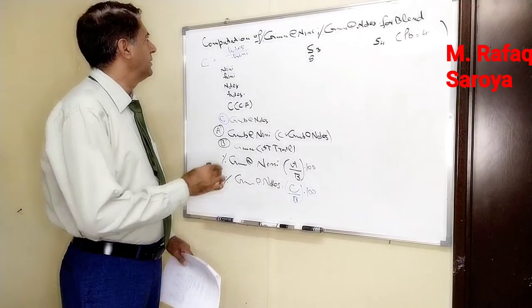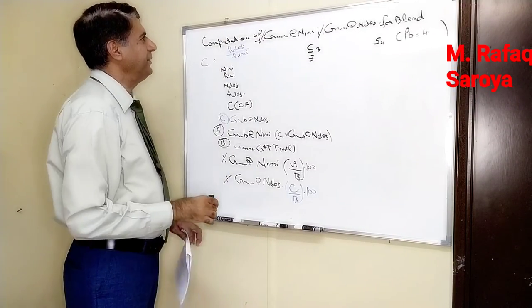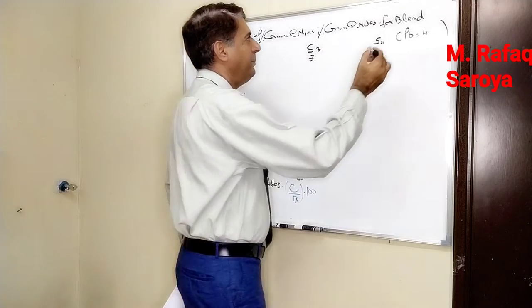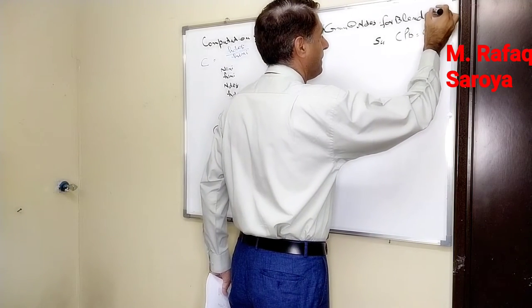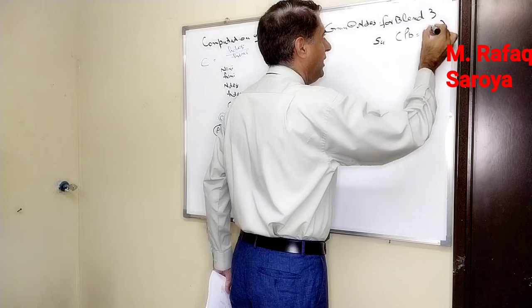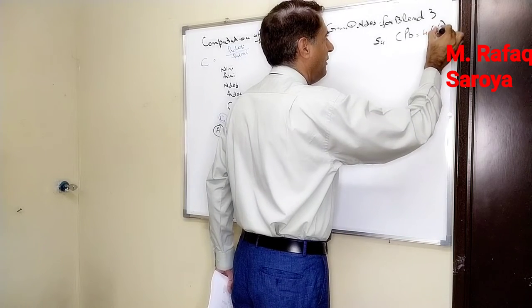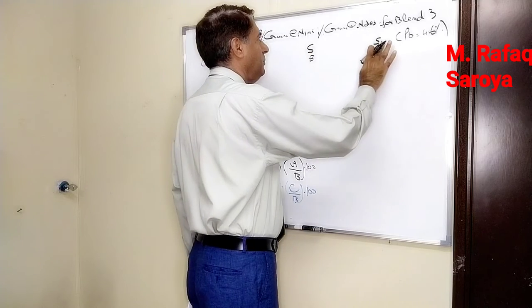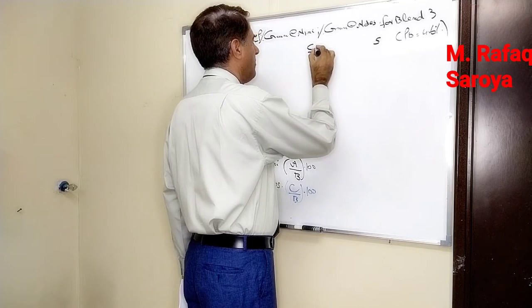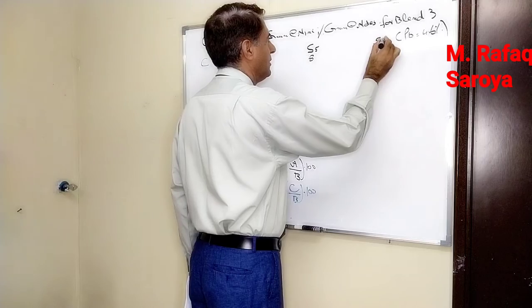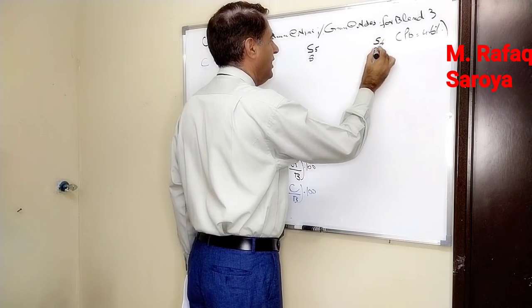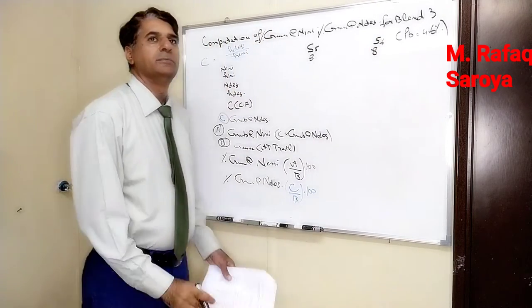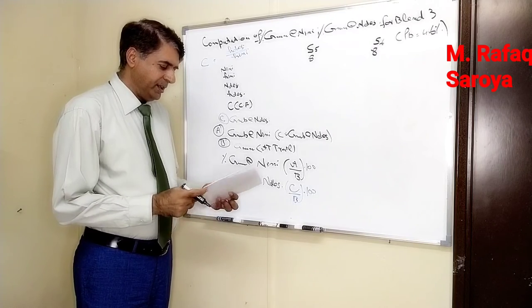Now we have to study the computation of these values for blend number three. With this blend number three, my percentage of binder content is this one, and these numbers would be changed to five and six initial number of gyration eight, which I have written over here.